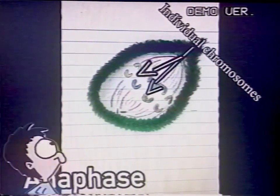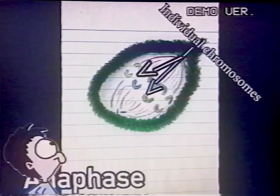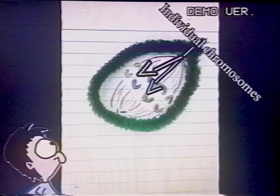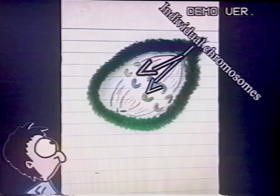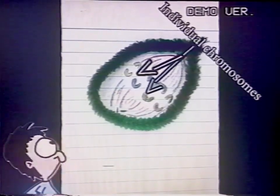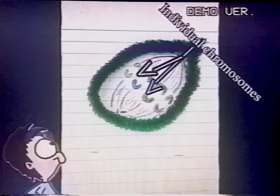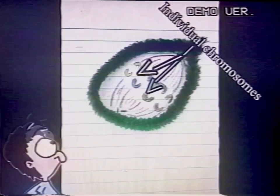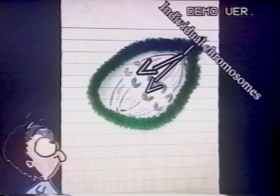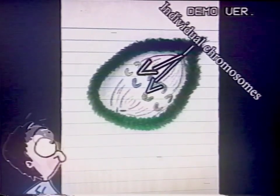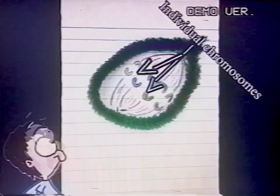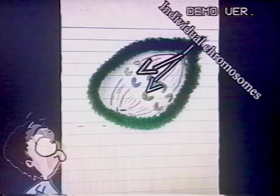After metaphase comes anaphase. During anaphase, the sister chromatids separate into individual chromosomes and are moved apart.